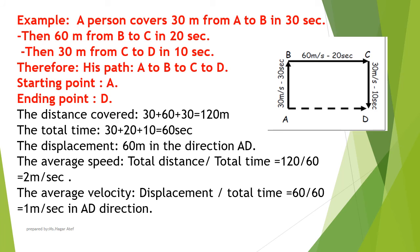So, the distance covered: 30 plus 60 plus 30 equals 120 meters. The total time: 30 plus 20 plus 10 equals 60 seconds. The displacement: 60 meters in the direction AD.